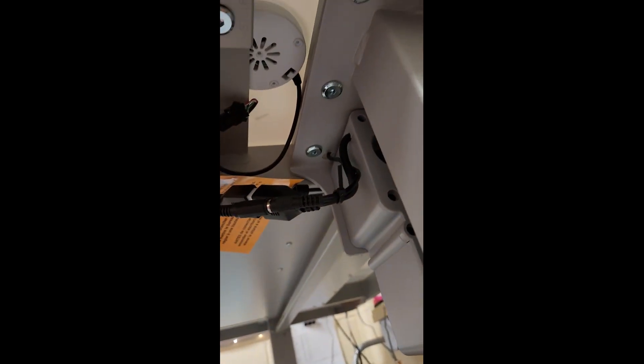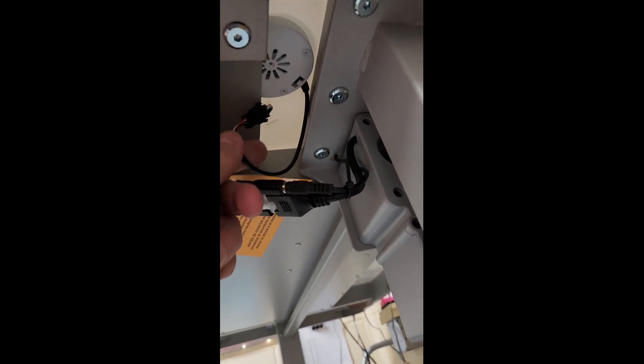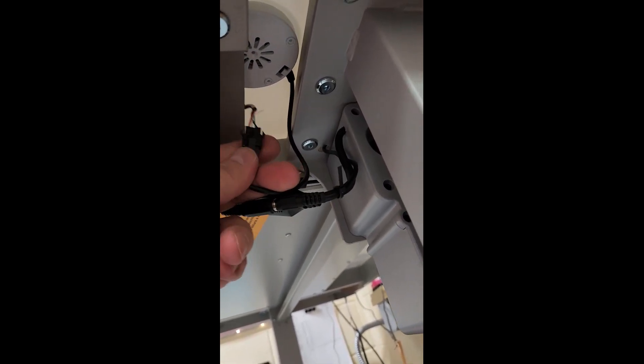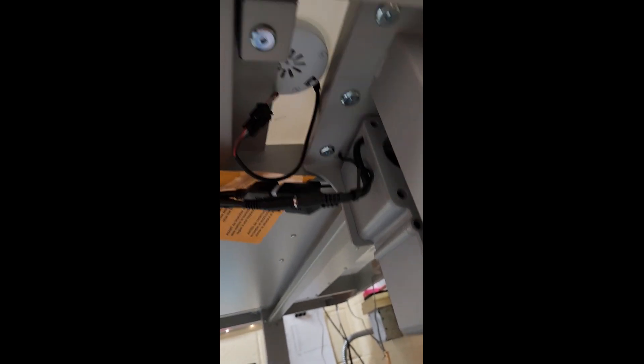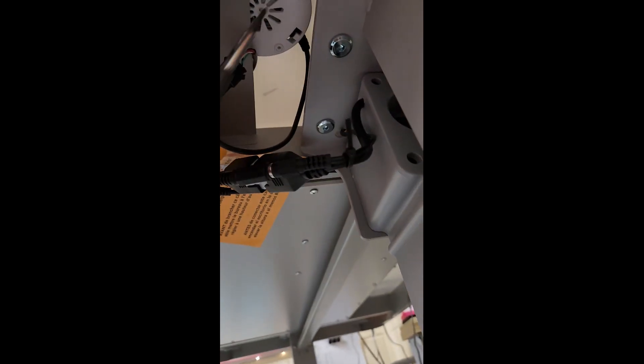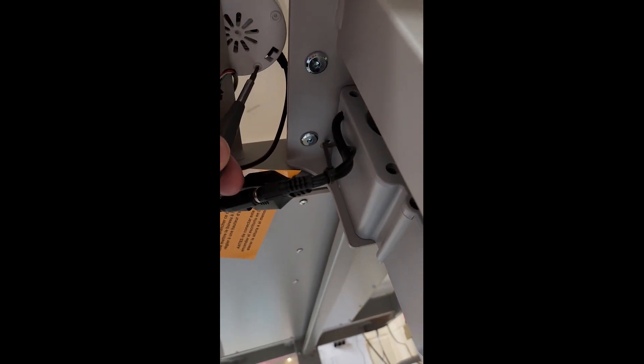The first step is grab a hold of the wire. This will be tucked up. Just give this a little tug. There's a connector. You just push the little release and then you can separate the two halves. There's two Phillips head screws. One here, one here. You'll have to remove those.